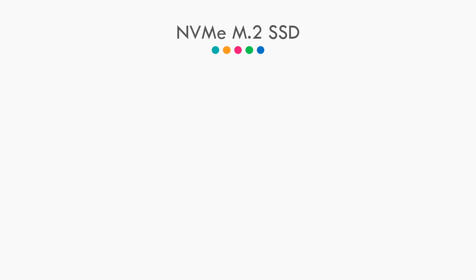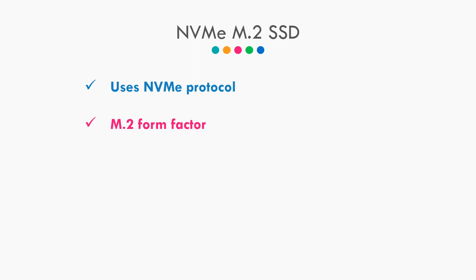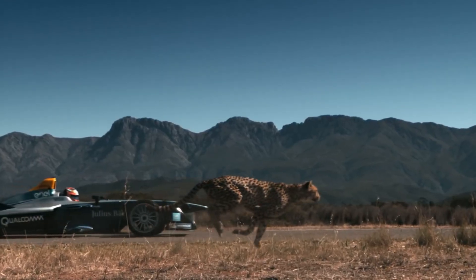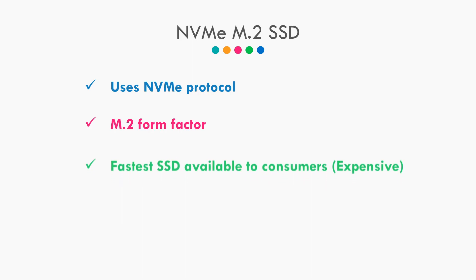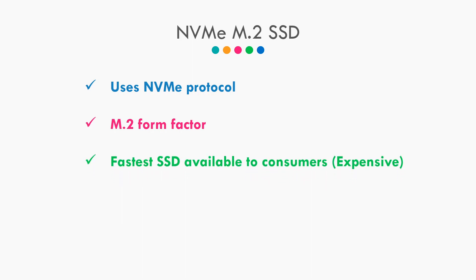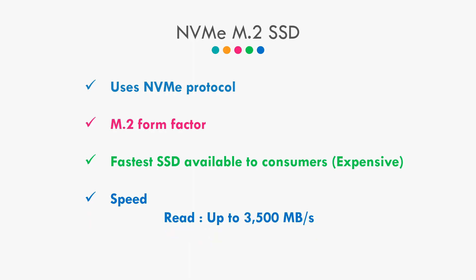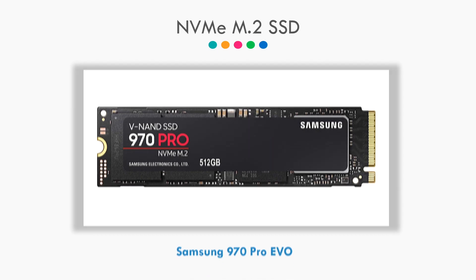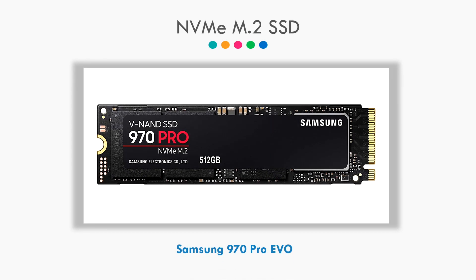First of all we have NVMe M.2. NVMe M.2 uses NVMe protocol and comes in the M.2 form factor. It uses PCIe as the connection interface, and since PCIe is way faster than SATA and NVMe protocol was specially developed for SSDs, NVMe M.2 is very very fast. In fact, it is the fastest SSD available to consumers. The read speed of NVMe M.2 is up to 3500 Mbps, whereas its write speed is up to 3300 Mbps. An example is the Samsung 970 Pro EVO.